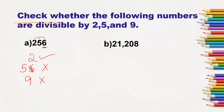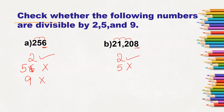Next, 21,208: it ends with 8, which is even, so it is divisible by 2. It ends with 8, not 0 or 5, so it is not divisible by 5. Adding digits: 2+1+2+0+8 = 13... wait, 2+1=3, 3+2=5, 5+0=5, 5+8=18. 18 is divisible by 9 — 9×2=18. So 21,208 is divisible by 9.